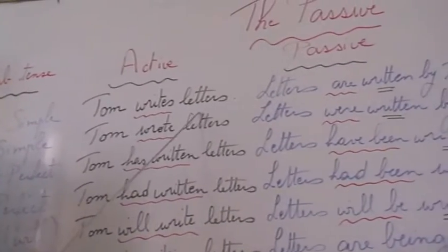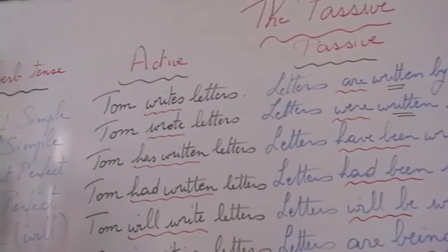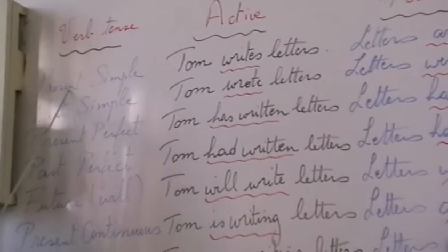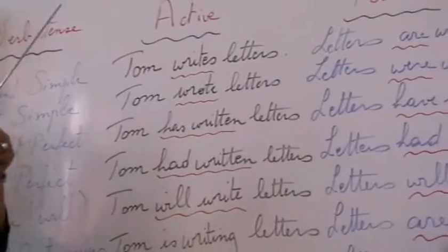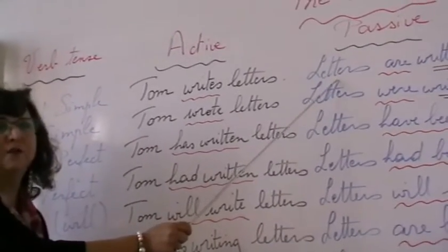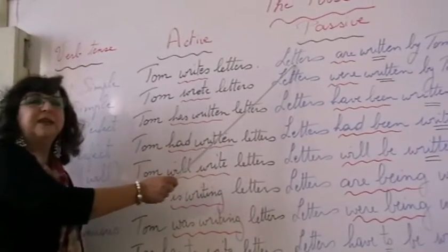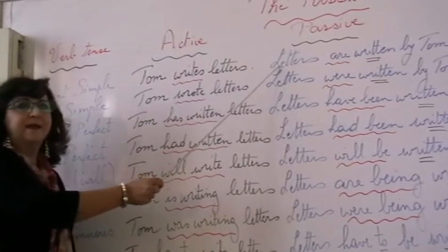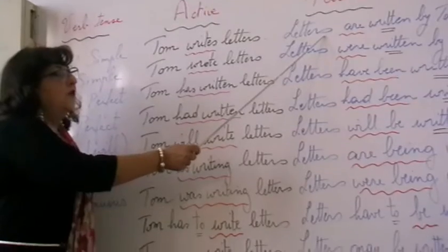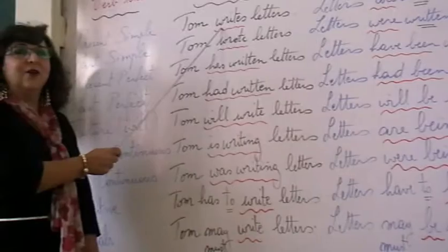Tom writes letters. Here, the verb is in the present simple tense. We have to keep in mind that we put the verb 'to be' in the same tense. Step number one, before looking at the verb, we have to start by putting the object first. As I said before in the previous video, we start the passive sentence by putting the object, so the object becomes the subject. So 'letters' comes at the beginning. Letters is plural, so I put 'to be' in the plural, and it must be the same tense — present simple.